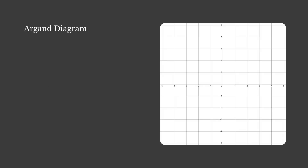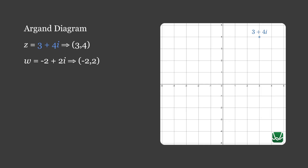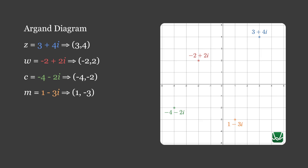Now let's construct an Argand diagram in Desmos to practice this new notation. The complex number z equals 3 plus 4i corresponds to the point (3, 4), as seen in blue, occupying the first quadrant. The complex number w equals minus 2 plus 2i corresponds to the point (minus 2, 2), as seen in red, occupying the second quadrant. The complex number c equals minus 4 minus 2i corresponds to the point (minus 4, minus 2), as seen in green, occupying the third quadrant. And the complex number m equals 1 minus 3i corresponds to the point (1, minus 3), as seen in orange, occupying the fourth quadrant.